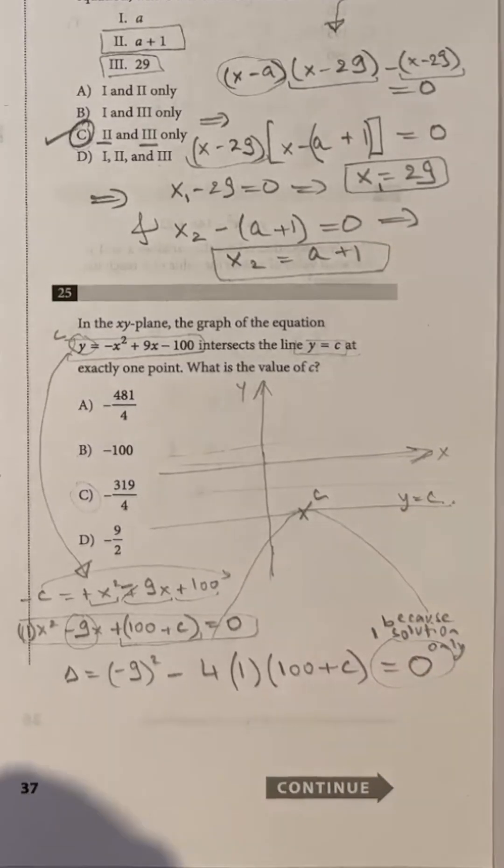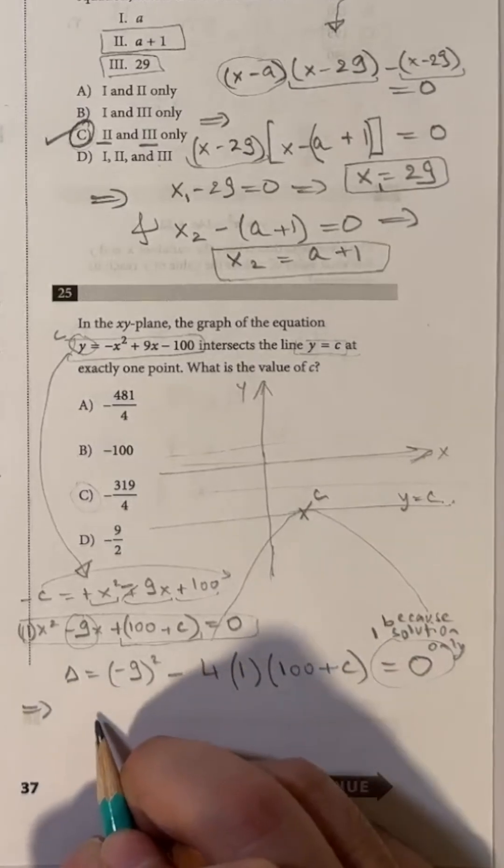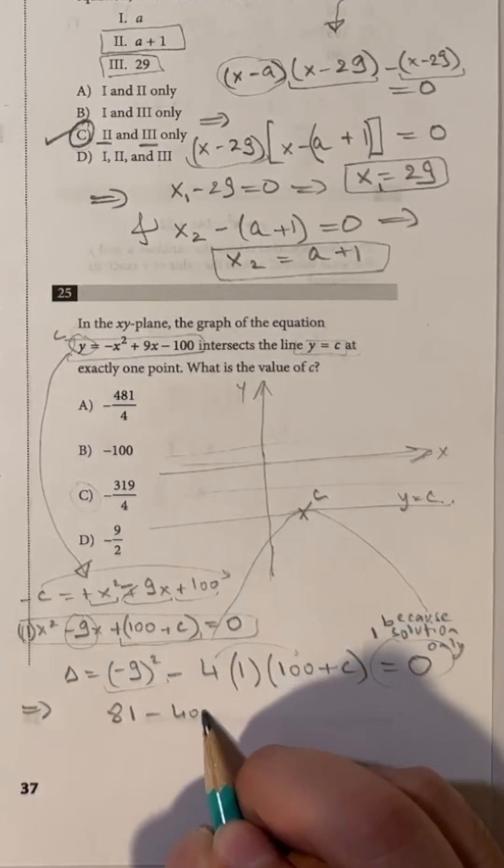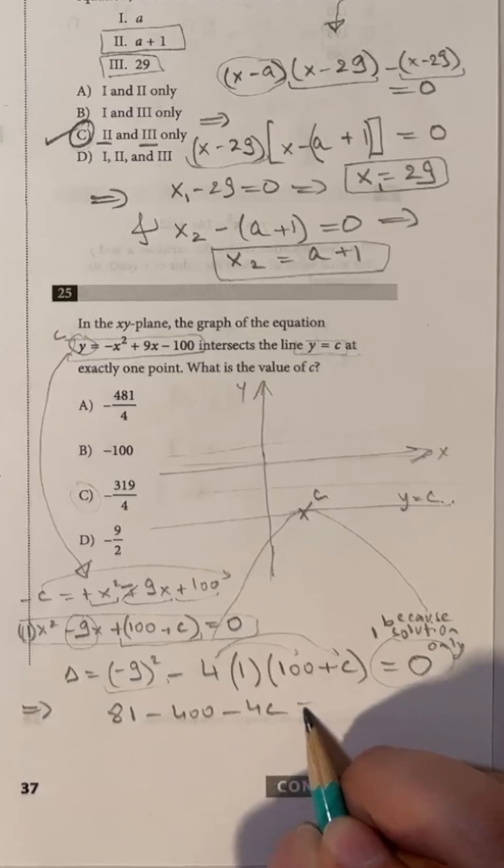And because only one real solution exists, the discriminant should be equal to 0. We now have one equation with only one unknown and we solve for c.